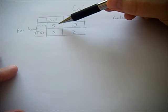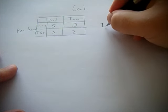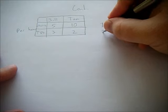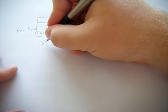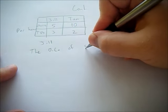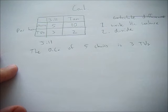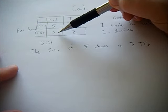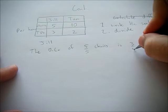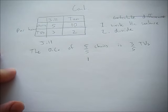It's already calculated for us in terms of 5 chairs per hour or 3 TVs per hour. Now all we need to do is write the sentence and divide. For Jill, the opportunity cost of 5 chairs is 3 TVs, because she can produce 5 chairs in an hour or 3 TVs in an hour. Divide by 5 to get 1 chair. The opportunity cost of 1 chair is 3 fifths of a TV.